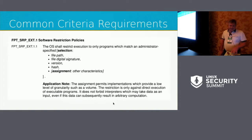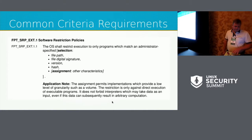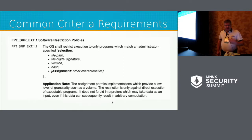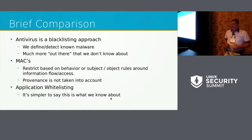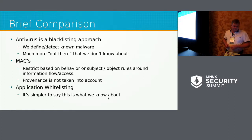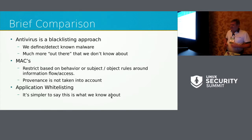Common Criteria has an optional requirement called software restriction policies, where you may elect one of several ways to restrict execution of software — some people use digital signatures, hash, or file paths. Antivirus is a blacklisting approach: it defines known malware, but the problem is there's much more out there we don't know about. Mandatory access control usually restricts based on behavior and subject-object rules around information flow and access; provenance of software is really not taken into account. Application whitelisting is a different approach where you define what you know about, which is simpler since you usually know what's installed on a system.